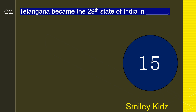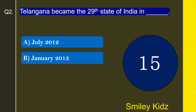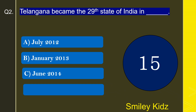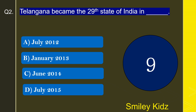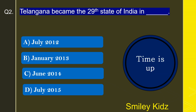Question number 2: Telangana became the 29th state of India in which year? Options are July 2012, January 2013, June 2014, or July 2015. The correct answer is June 2014. Telangana became the 29th state of India in June 2014.